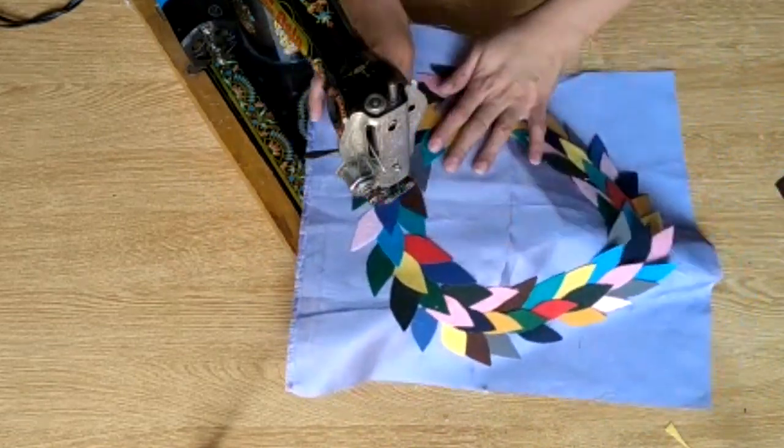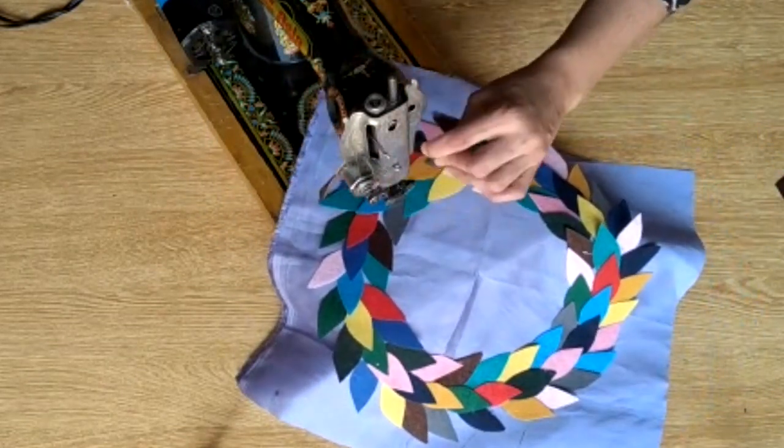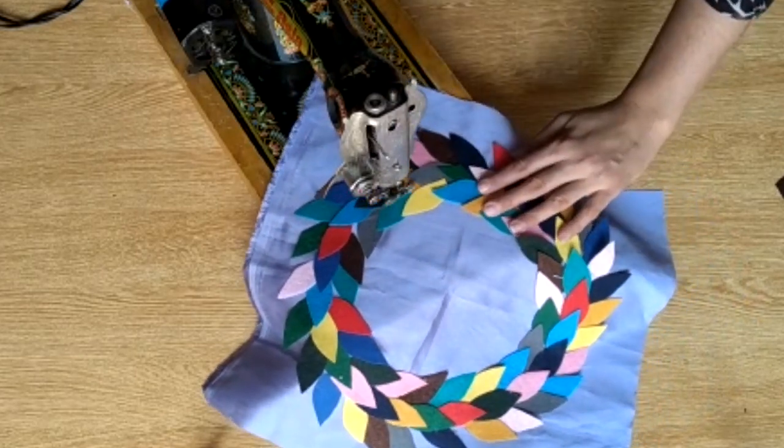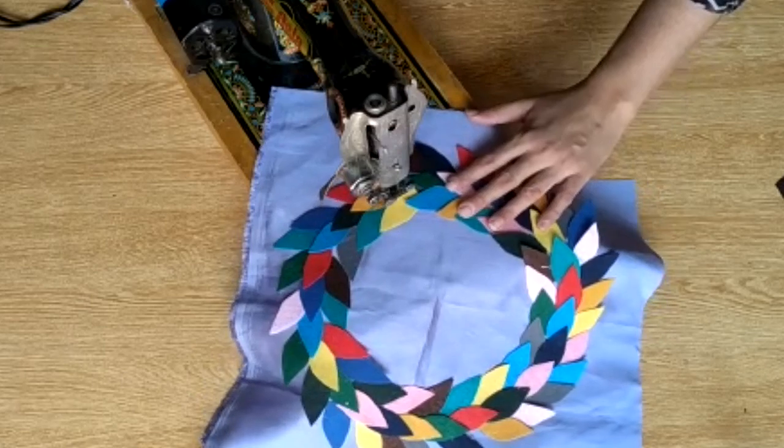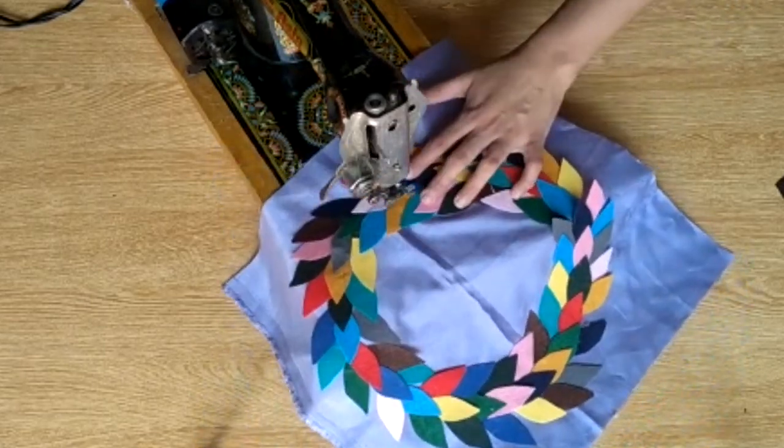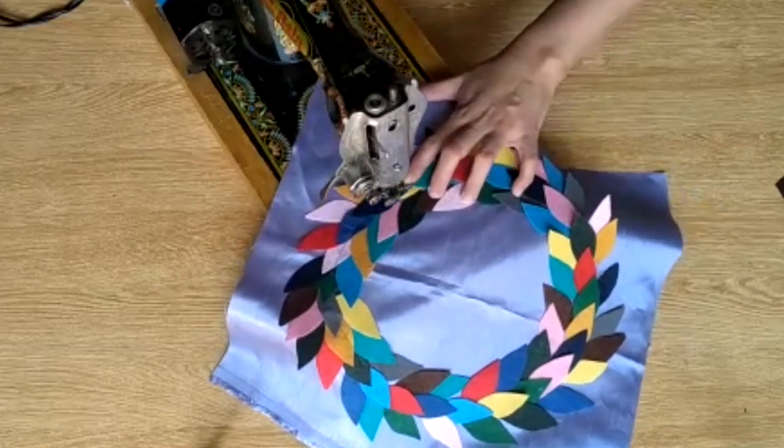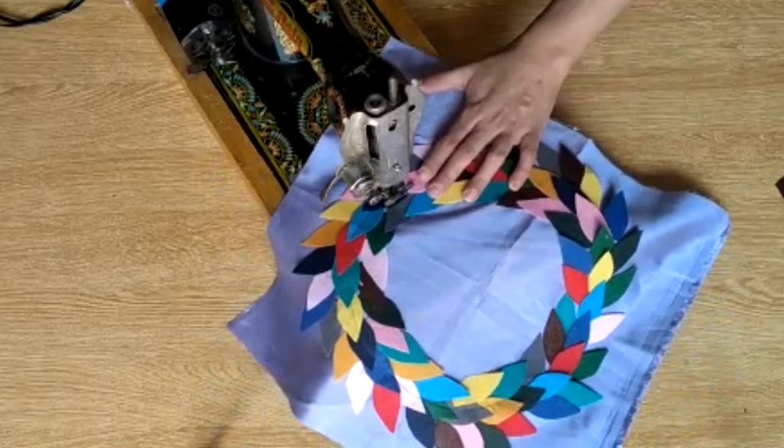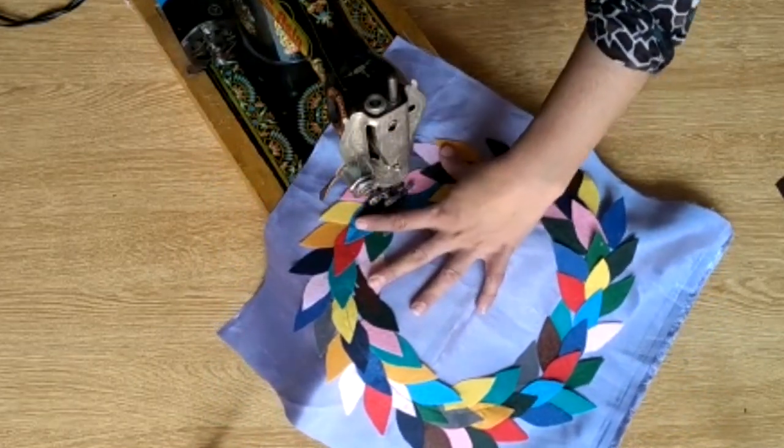Now what I am going to do is to stitch it on the upper side so that it's fixed on the cushion. So I will put a line in this way so that it will be fixed. And these leaves, the inside leaves, I just wanted to press the leaves.